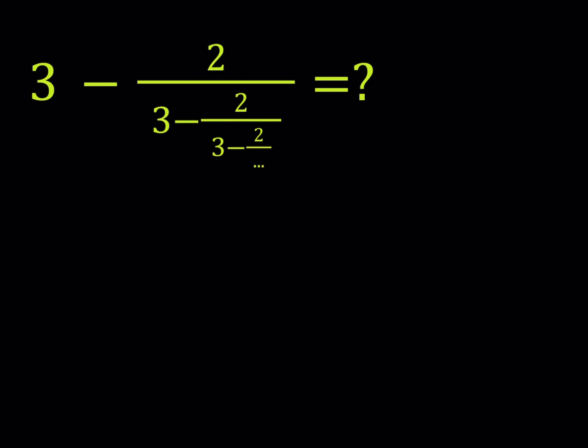For example, suppose you had the following, something like this. Obviously, if you knew the shortcut to this, you could tell the answer right away. But let's just assume that you don't. So what would you do? Well, you would probably set this equal to x, the whole thing, right?